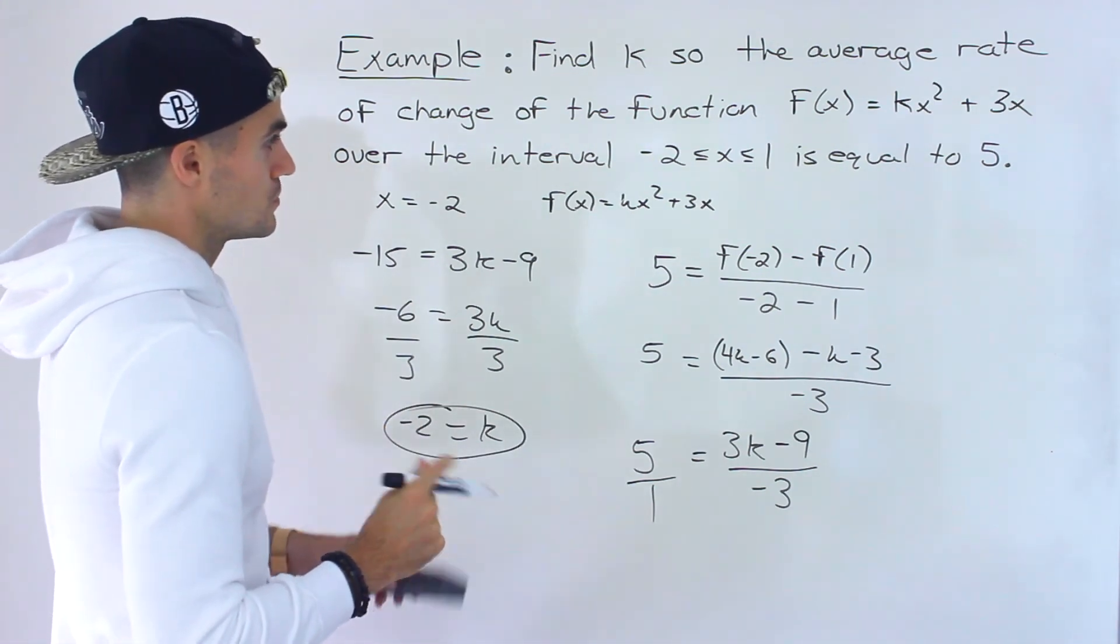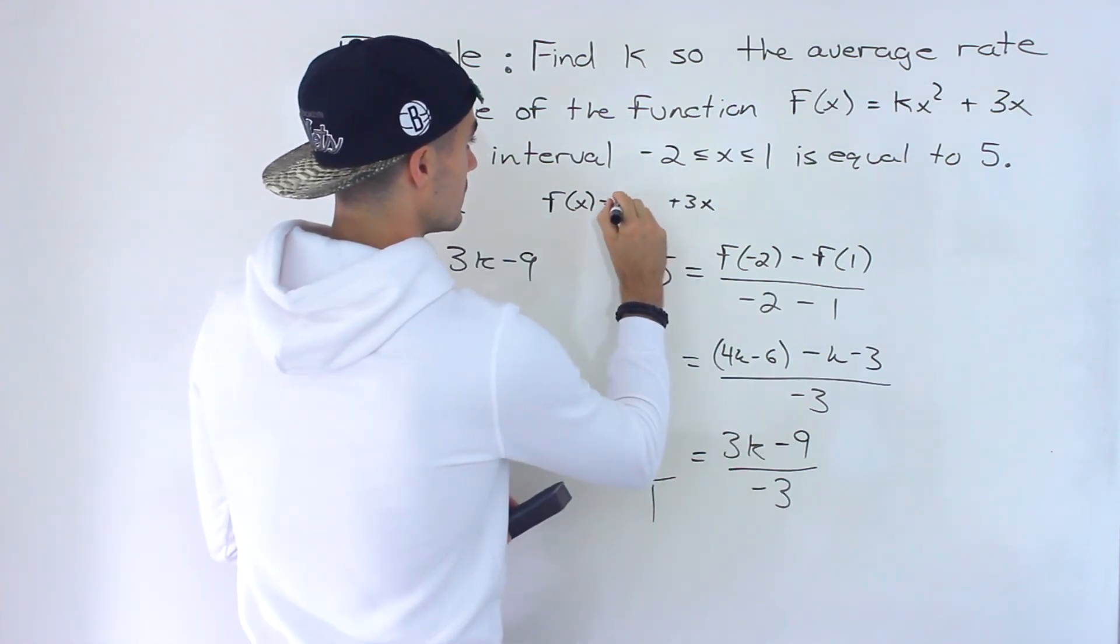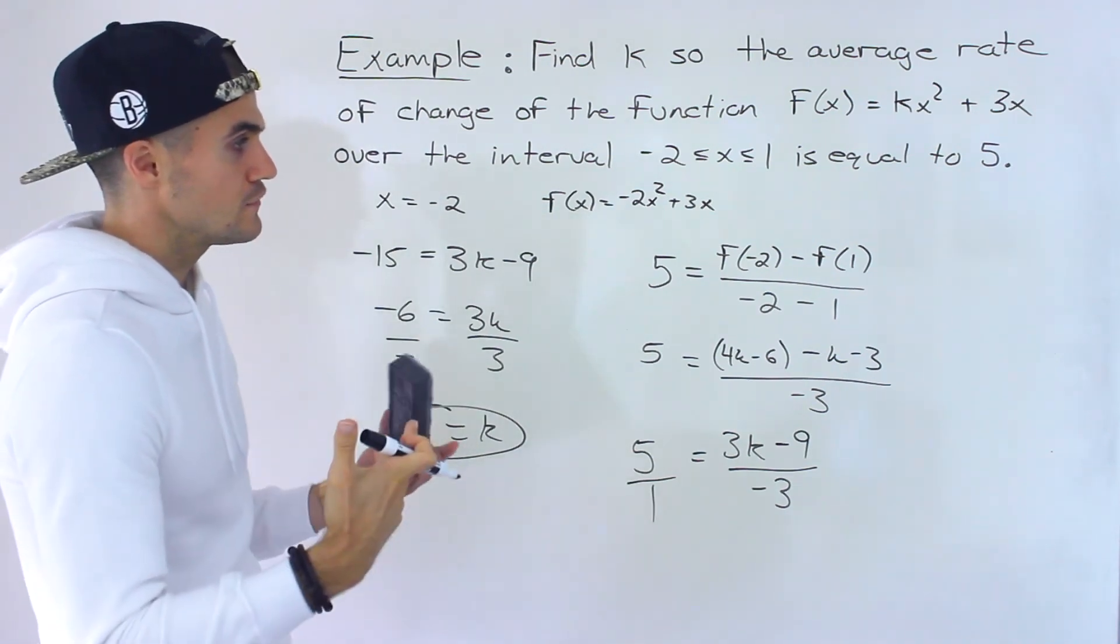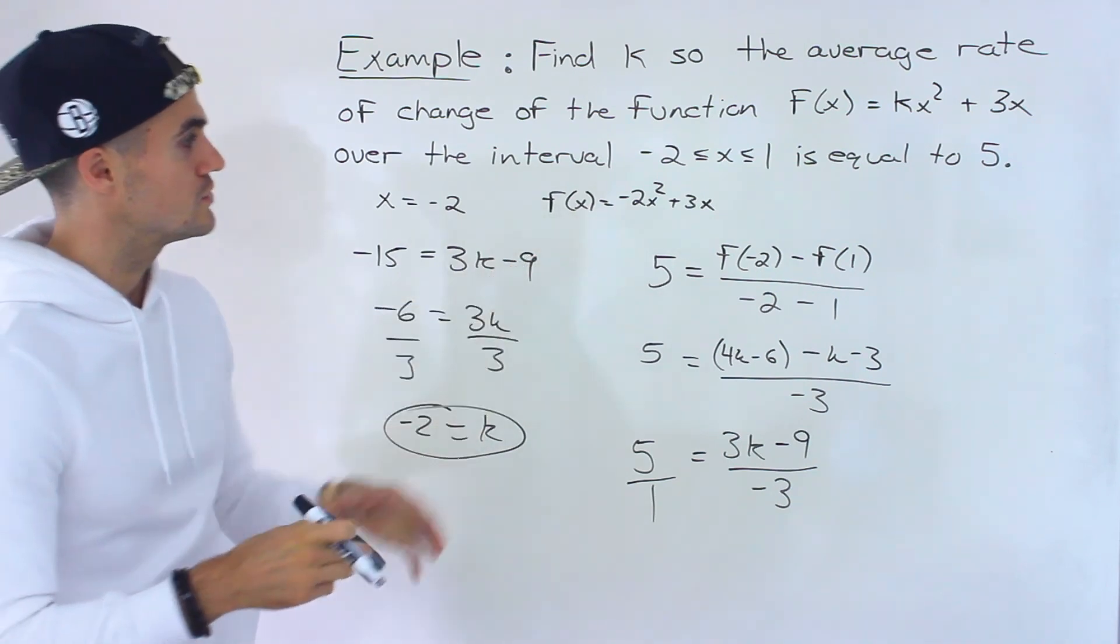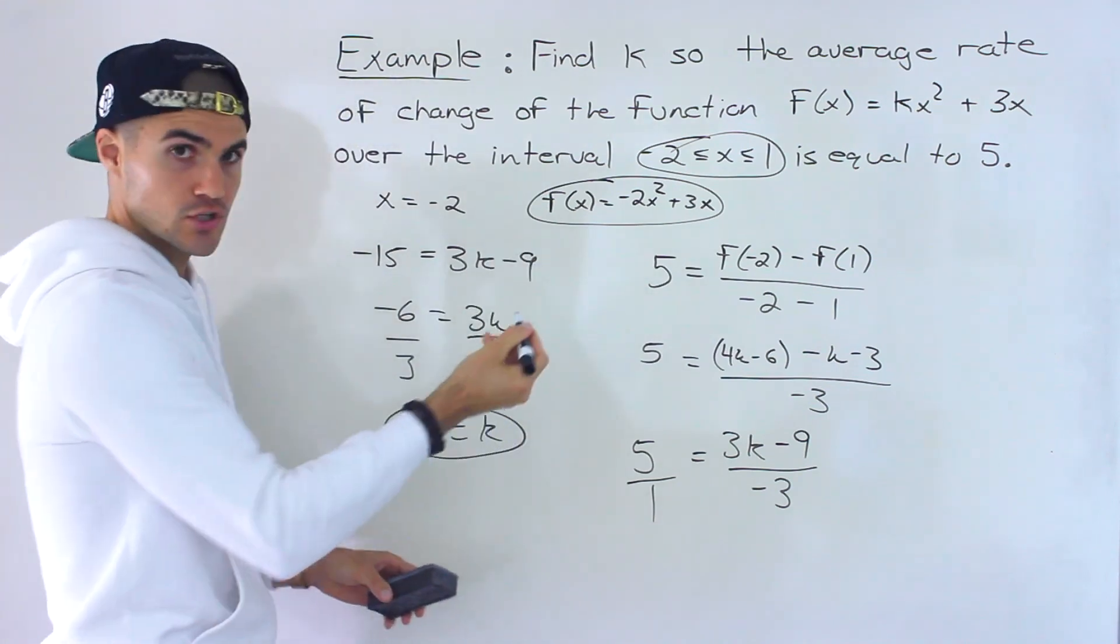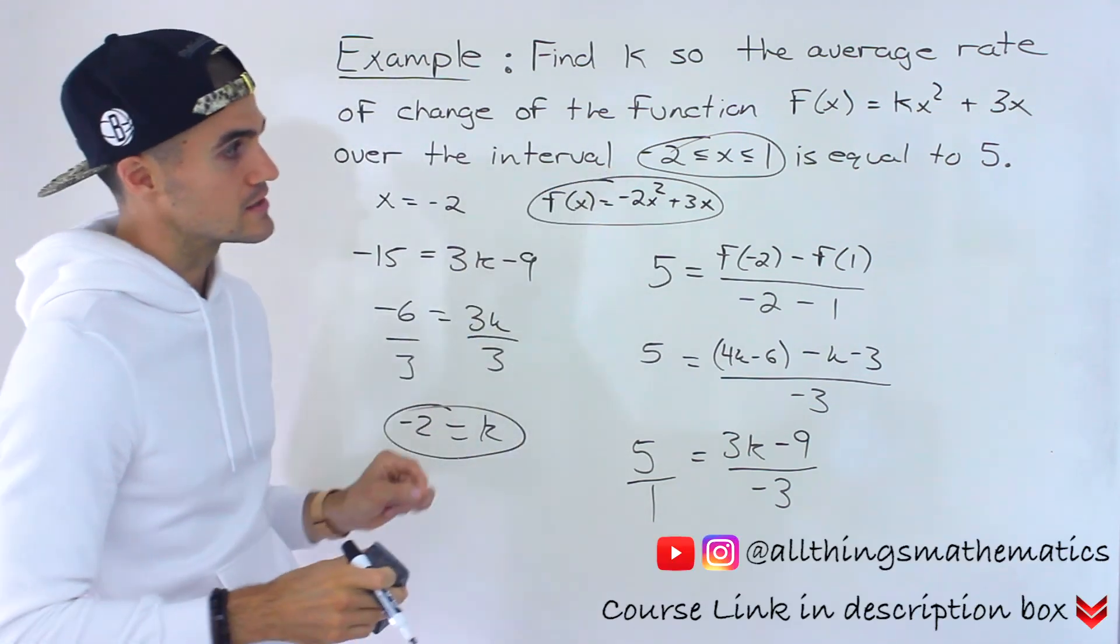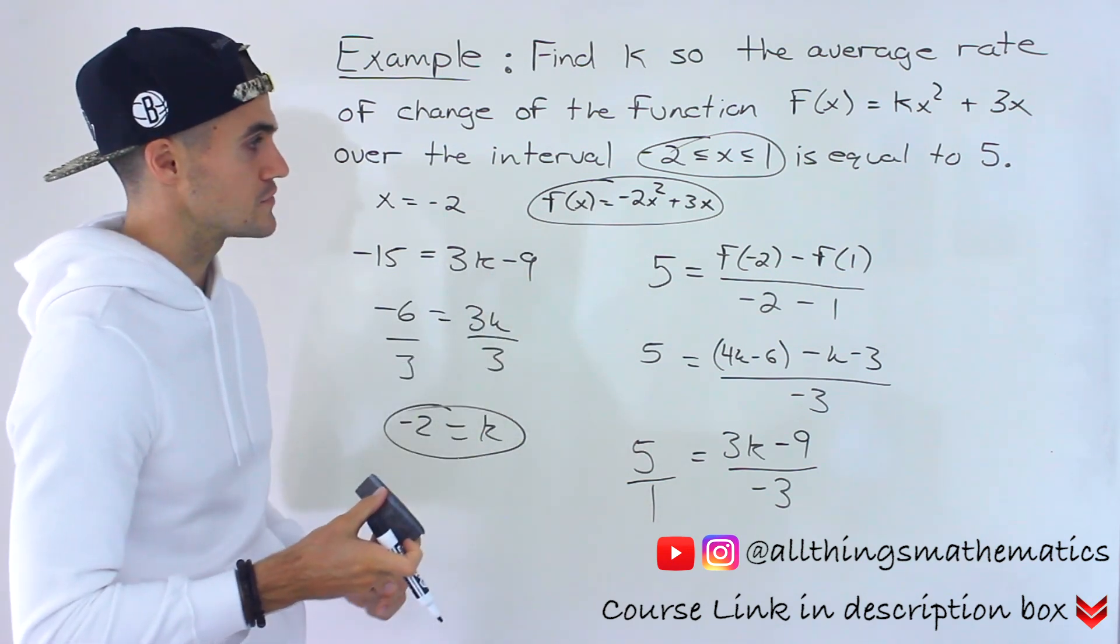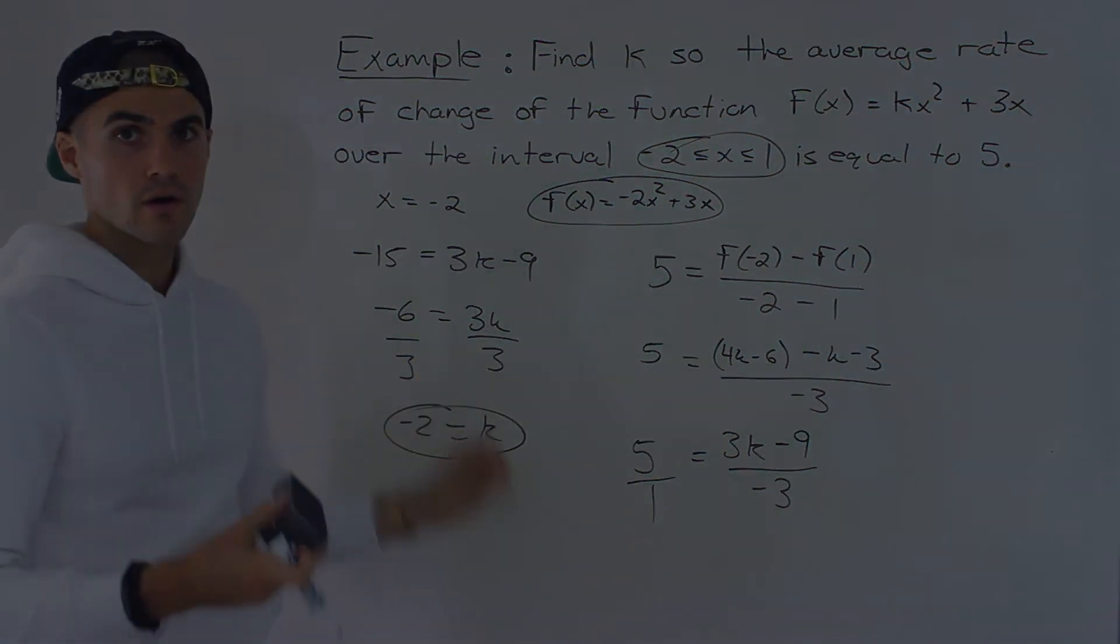So that's what the k value would be. The function would be negative 2x squared plus 3x. If this comes up on a test and you have extra time, you could check this answer. Take this function and this interval, find the average rate of change on it as we did in videos before, and see if it does equal 5. If you do the algebra properly, you will find it does equal 5. That's a nice way to check your answer.